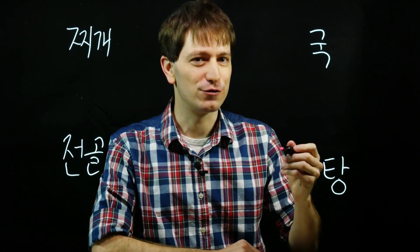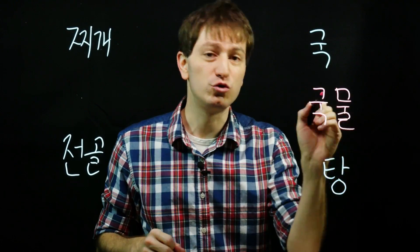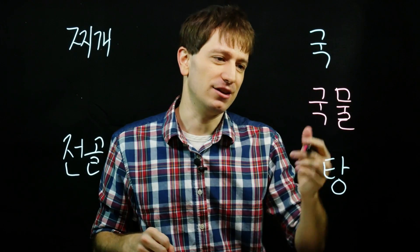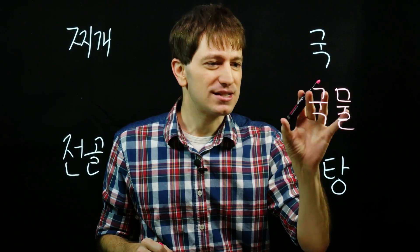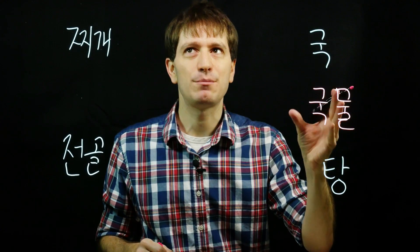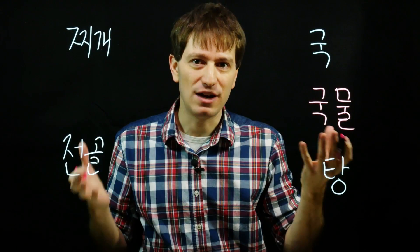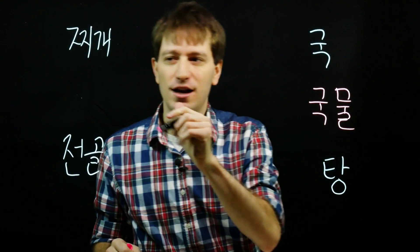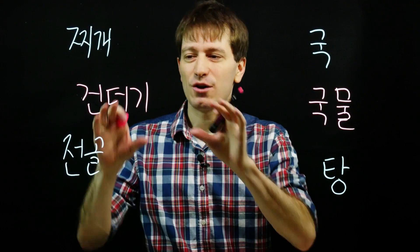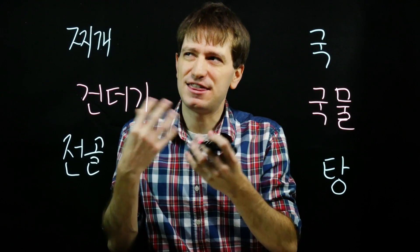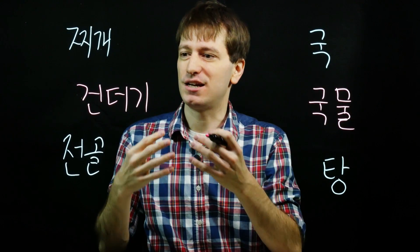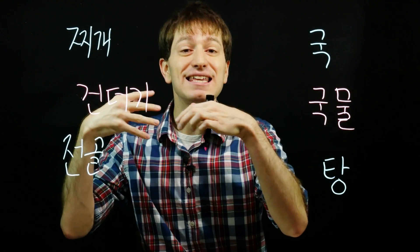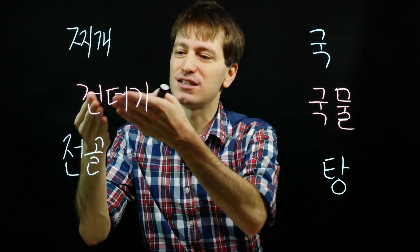There are two words we should learn first. The first is 국물, which is broth — what you get when you simply boil down vegetables and meat together. This is not a soup by itself, but sometimes you might just drink 국물. For example, at a 오묵 or 오뎅 vendor selling fish cake, they might give you a cup to drink while you eat. Another term is 건더기 — the small pieces of things within soup, like vegetables or meat, that give 국물 more texture. Any ingredients in the soup are referred to as 건더기.